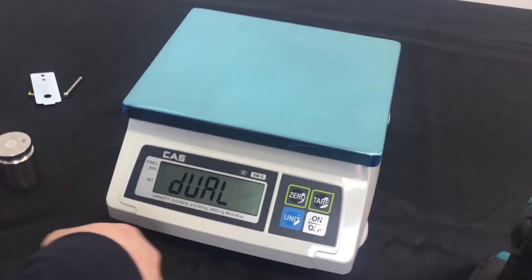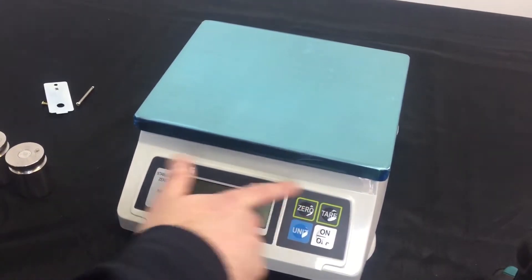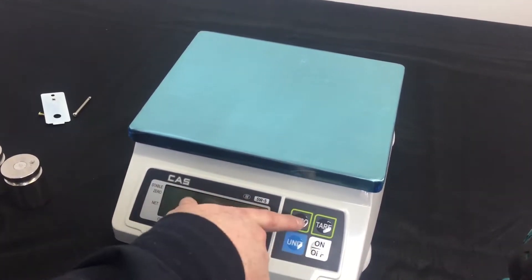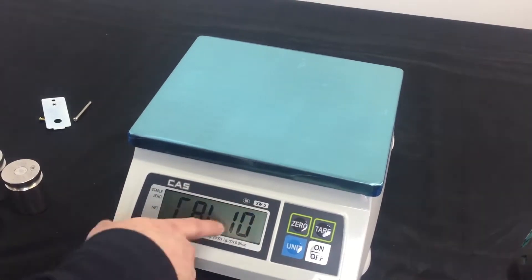So, as soon as that's good, you press the zero key. Dual. This is not a dual range scale, so zero is good. Press that tare. Not using that, so zero is good. Press zero. Back to Cal 10.